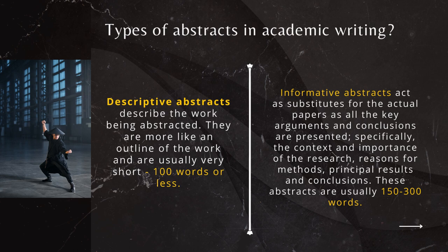Informative abstracts are what we all hope for and aim for. They allow you to provide a lot of detail and convey important points to your audience or reader. Informative abstracts act as substitutes for the actual papers, research, dissertation, or thesis you may be unpacking. Key arguments and conclusions are typically presented, the context and importance of the research is emphasized, reasons for methodology are unpacked extensively, and the principle results and conclusions are presented. You really get into the nitty-gritty of what your data says and what broader insights you can unpack.